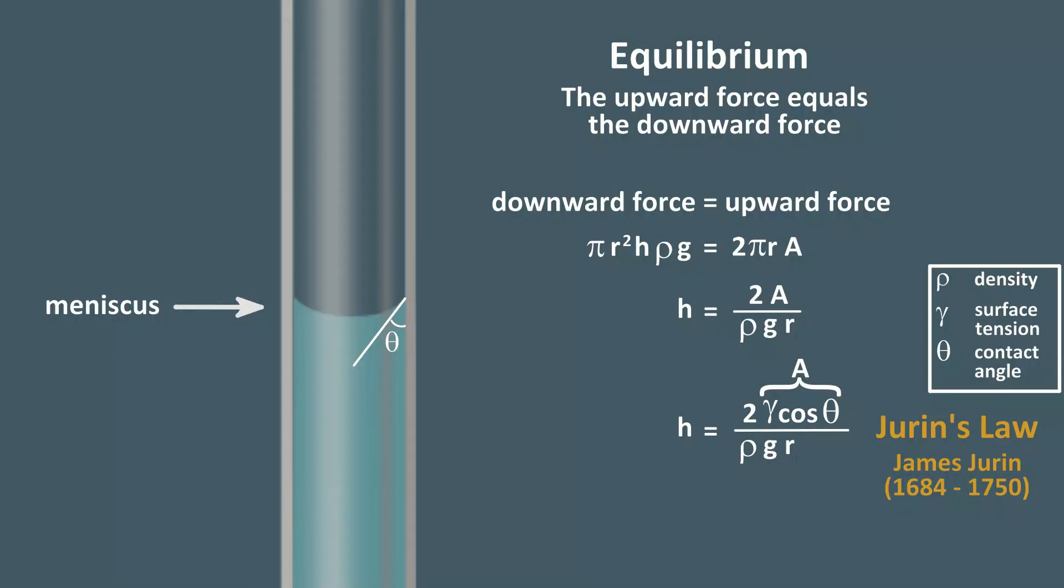As the adhesion of the liquid to the tube increases, the angle theta gets smaller, and cosine theta approaches 1. If the adhesion of the liquid were very low, the angle theta approaches 90 degrees, and cosine theta approaches 0.